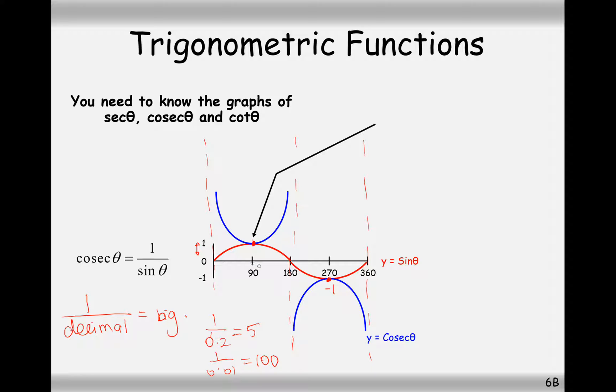Thinking about it in between 90 and 180 degrees, if we have 1 over a decimal, a decreasingly smaller decimal, then it's going to increase in value when we take 1 over that decimal value. And the same thing happens on the negative side as well. If we've got 1 over a negative decimal, this is going to be a bigger value, or a more negative value anyway. So this is what the cosec graph is. And it continues to repeat itself.